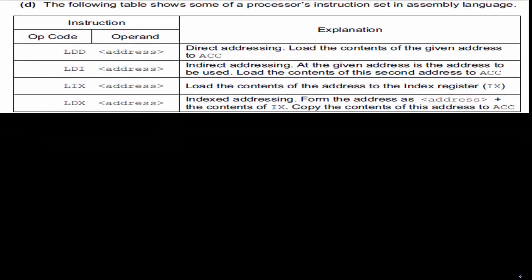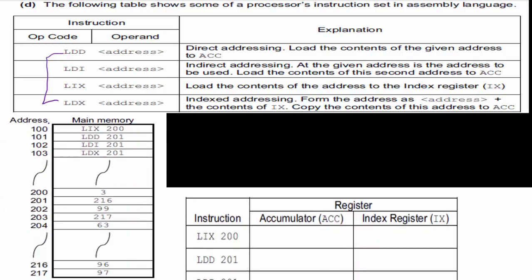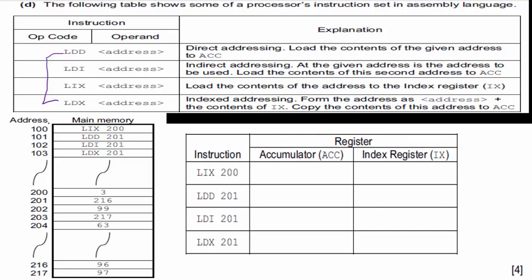This next one has a different table description — something they've done on more recent exams. They literally tell you what each instruction does, which is very generous. But we still need to know what these things do; we've got to be familiar with them. One of the most common mistakes students make is thinking, 'I'll get the description on the exam so I don't need to study.' If you haven't worked with these, you may be uncertain. Here's our assembly language — fill this out for four easy points.